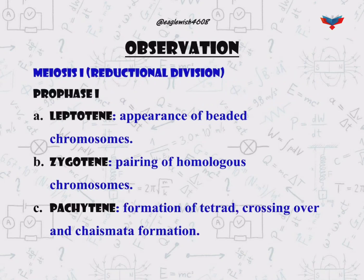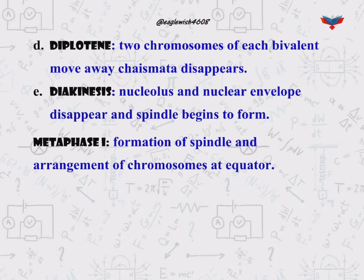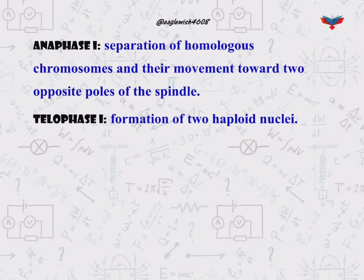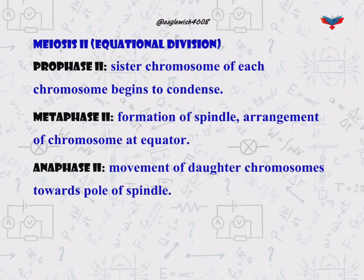In observation, we will mention that meiosis occurs in two stages: meiosis 1 and meiosis 2. Both phases are divided into four stages: prophase, metaphase, anaphase, and telophase. Meiosis 1 is more complex than meiosis 2. Before the starting of meiosis 2, interkinesis occurs. Meiosis generally occurs during gametogenesis.